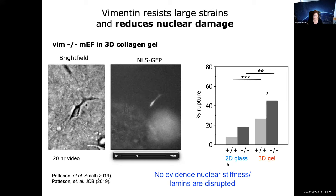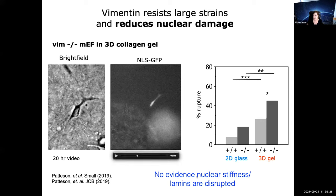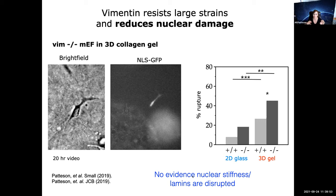Null cells have more nuclear rupture, and this was particularly important for 3D gels compared to cells on 2D glass, where cells aren't subject to quite as high stresses and don't rupture as often. Importantly, there's no evidence that the nucleus itself is softer or more deformable in these null cells. With Goldman's group, we measured that lamin A, B, and C levels are approximately the same. Paul's group also isolated these nuclei out of the cell and did AFM testing — outside the cell, the nucleus has the same stiffness. So it's really something about vimentin in the cell, perhaps cushioning the nucleus and preventing large deformations that might cause damage.